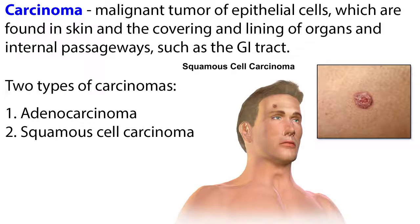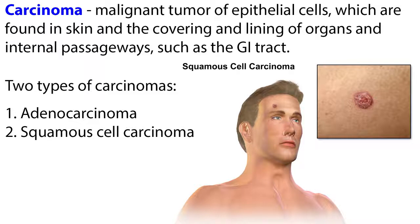Carcinoma is a malignant tumor of epithelial cells, which are found in skin and the covering and lining of organs and internal passageways, such as the GI tract. Carcinomas usually affect organs capable of secretion including breast, lung, bladder, prostate, and colon. There are two types of carcinomas: adenocarcinoma and squamous cell carcinoma. Adenocarcinoma develops in mucus-secreting glands and is rapidly spreading. Squamous cell carcinoma is one of the main types of skin cancer.